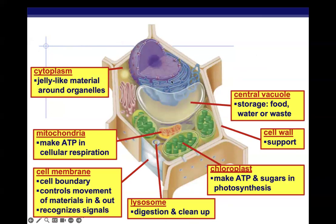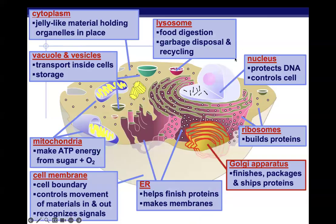Here is an animal cell and a plant cell showing the structures we've talked about so far. These main organelles are the ones you absolutely need to know cold for the AP exam and for class. It's not too many, and you may have already worked on these structures back in seventh grade.